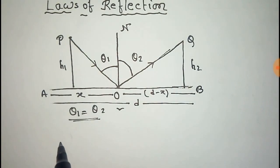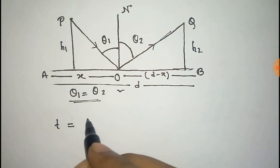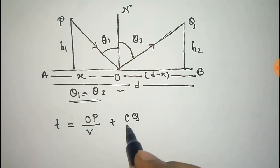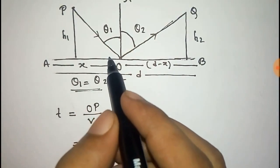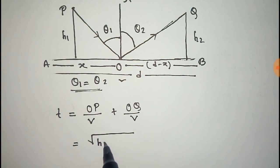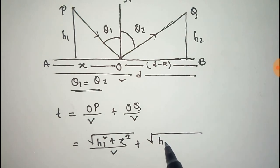Light comes from P and goes to Q, so the total time taken by light to go from P to O is OP divided by V, plus O to Q which is OQ divided by V, where V is the velocity of light in the medium. We can write OP as root over (H1 squared plus X squared) divided by V, and OQ is equal to root over (H2 squared plus (D minus X) squared).